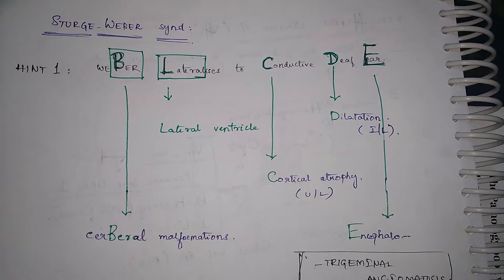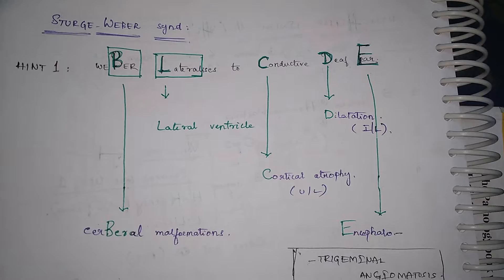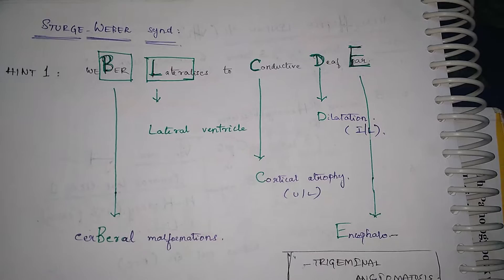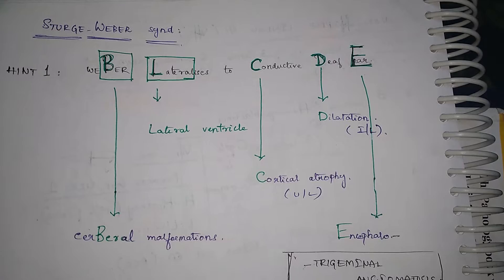So our hint one is Weber lateralizes to conduct to deaf ear. This also quotes for ENT Weber test. So from the word Weber in the disease Sturge-Weber we have our first hint Weber lateralizes to conduct to deaf ear.